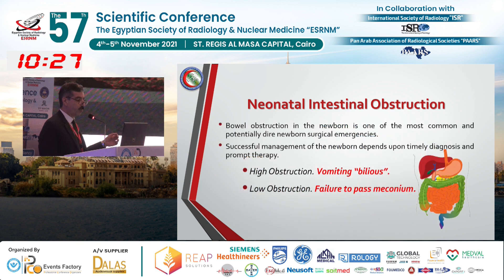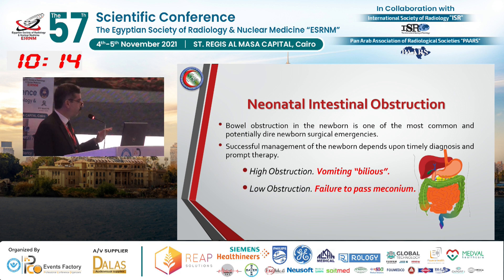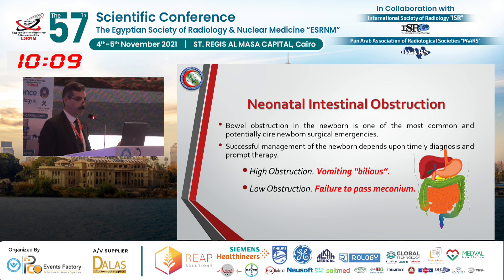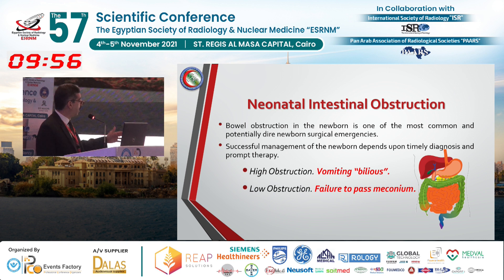Just to remember a few points when doing neonatal intestinal obstruction — it's not like adults. Always consider that children have their special considerations. We do high obstruction or low obstruction; we don't do small or large bowel obstruction like adults. High obstruction will present by vomiting, which is usually bilious, within the first 24 to 72 hours of life. If you have low obstruction, beyond the mid-jejunum involving the ileum and large bowel, you will have failure to pass meconium.